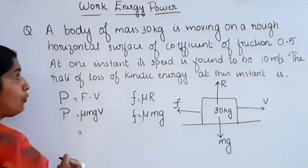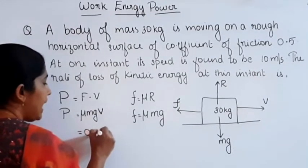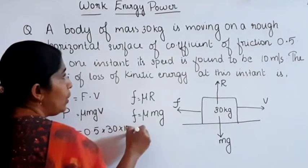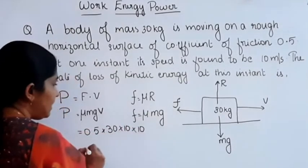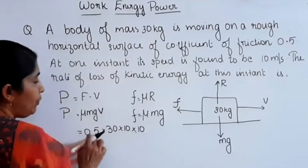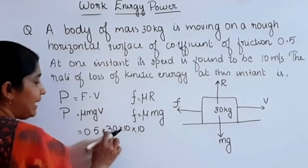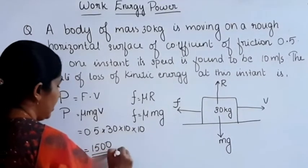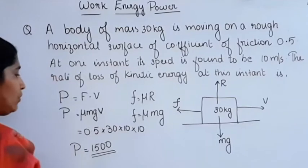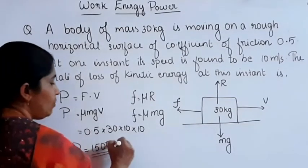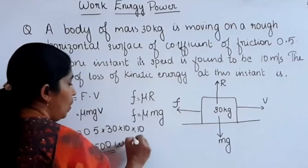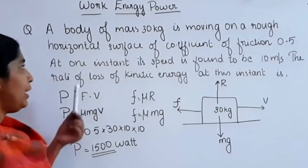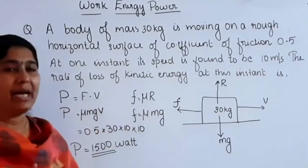Substituting values: μ is 0.5, M is 30 kg, g is 10, and velocity V is 10 meter per second. So power P equals μMgV equals 0.5 × 30 × 10 × 10 equals 1500 Watt. That is the rate of loss of kinetic energy at this instant.